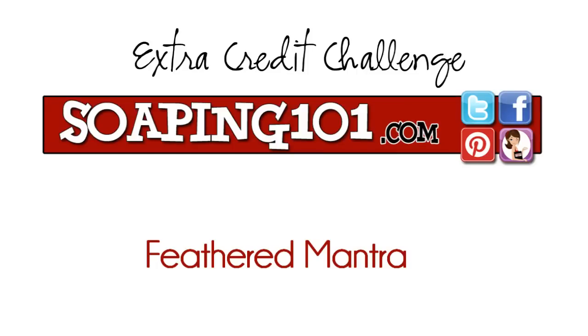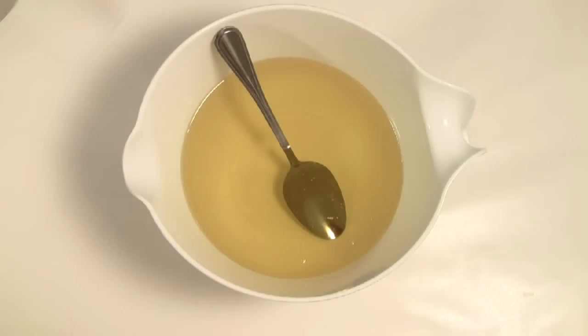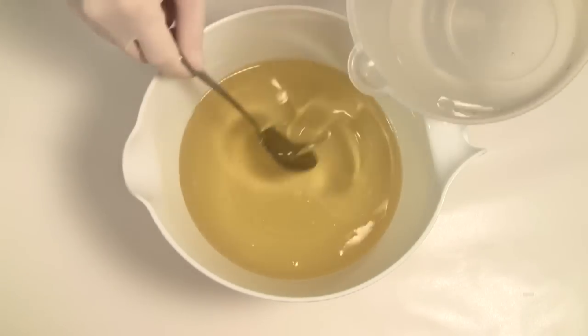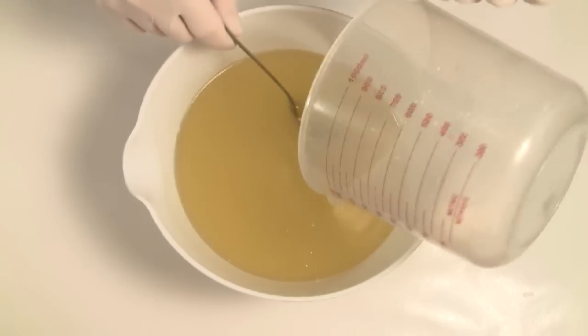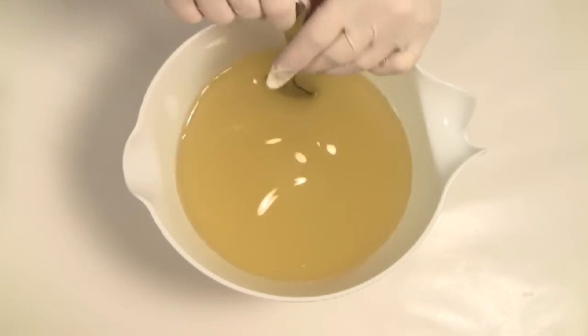Welcome to Soaping 101. For our fifth challenge we are creating the Feathered Mantra Swirl. So choose your favorite slow tracing recipe and begin by adding your room temperature lye water to cooled oils. This should give you plenty of time to work with your batter.